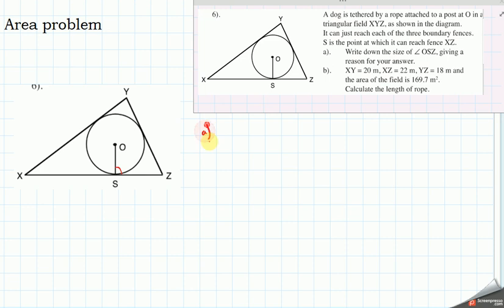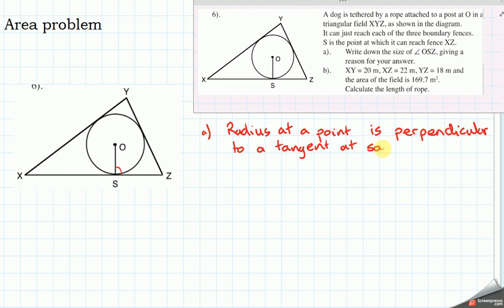So part A, radius at a point is perpendicular to the tangent at the same point. So therefore, that's my reason, and it leads me to angle O, S, Z is 90 degrees.